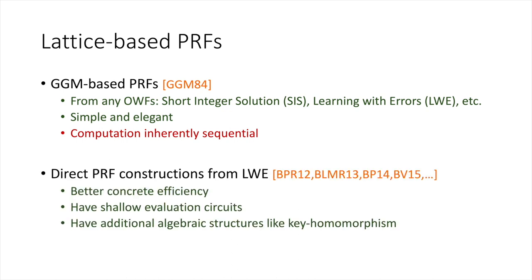The other family of PRF constructions from lattices are direct constructions from LWE. These PRFs generally have better concrete efficiency compared to those from one-way functions, and they also have shallow evaluation circuits. Furthermore, they have many useful algebraic structures like keyhomomorphism, which has a number of nice applications.